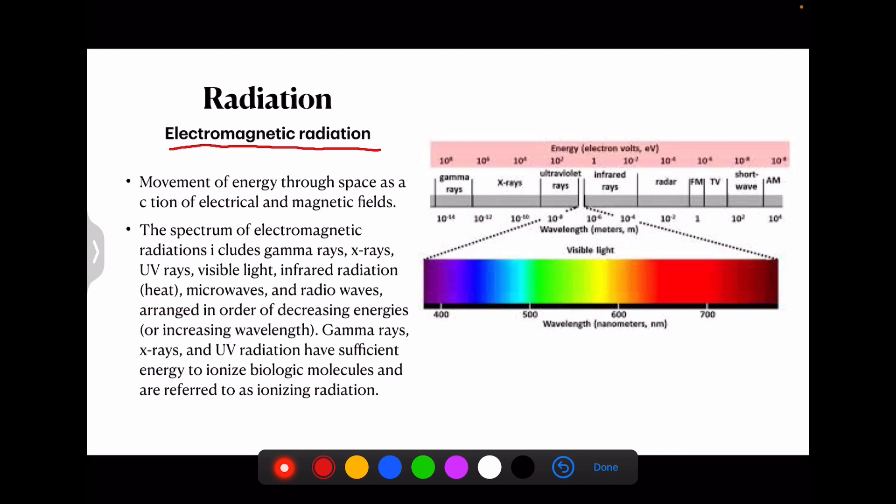As you can see here all types of radiations based upon the wavelength which is described here. Here we can see the wavelength of visible light. The spectrum of these electromagnetic radiations includes gamma rays, x-rays, UV rays, visible light, infrared rays, microwave radiations, radar and other radiations. Gamma rays, x-rays and UV radiations have sufficient energy to ionize biological molecules and are referred to as ionizing radiation.